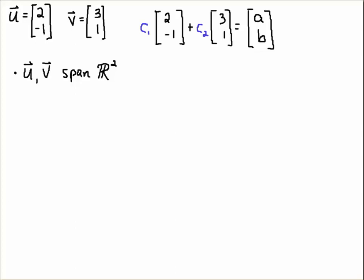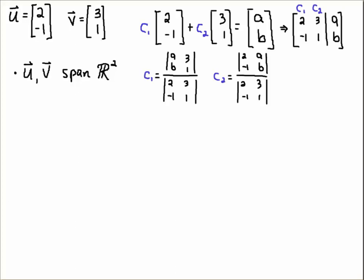Notice that I could write this linear combination as a system of equations. I'll write that as an augmented system where I have [2, -1] as the first column, [3, 1] as the second column, and then [a, b] is the right-hand side. You can think of this as a matrix equation where c₁, c₂ is a vector and this 2x2 matrix equals [a, b] on the right-hand side.